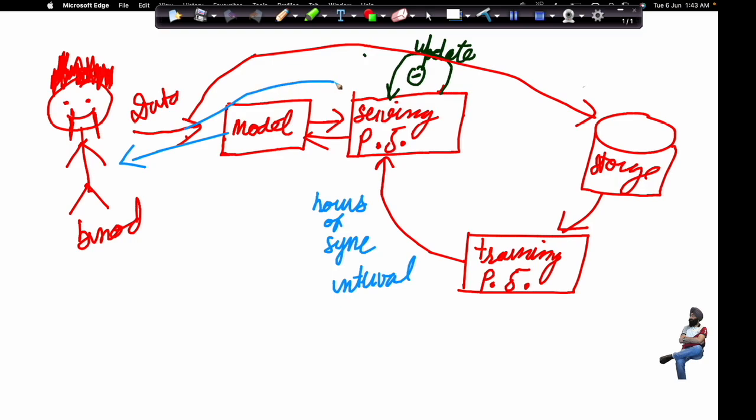What it will do is dump all the data into storage. Similarly, it will send this updated data to the serving parameter service. The serving parameter service will perform some gradient descent and then update the parameters in real time. Then new reels will be presented to Binod again and Binod will start enjoying this content.